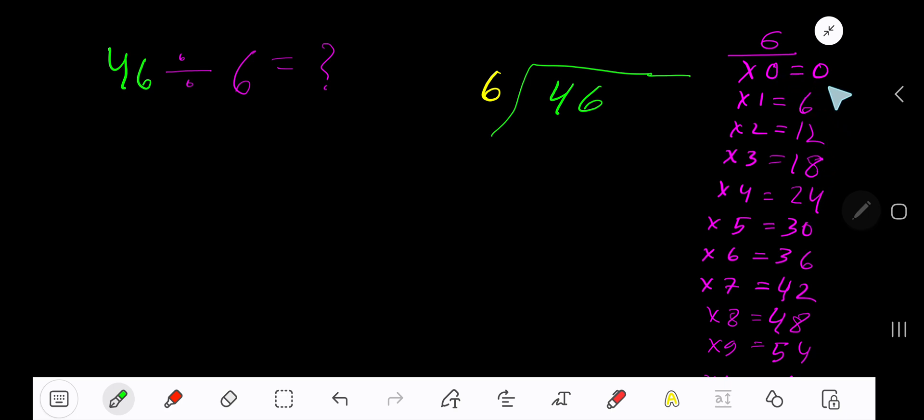To find out the multiplication table of 6, just add 6 with the previous step: 0 plus 6 is 6, 6 plus 6 is 12, 12 plus 6 is 18, 18 plus 6 is 24. This process will continue. 6 goes into 4 how many times? 0 times, as 4 is less than 6.